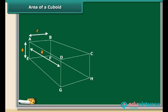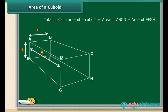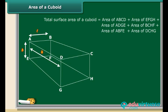The total surface area of a cuboid is equal to the sum of the areas of its 6 faces. This works out to LH plus LH plus BH plus BH plus LB plus LB. Therefore, the total surface area of a cuboid is equal to 2 into (LB plus BH plus HL).